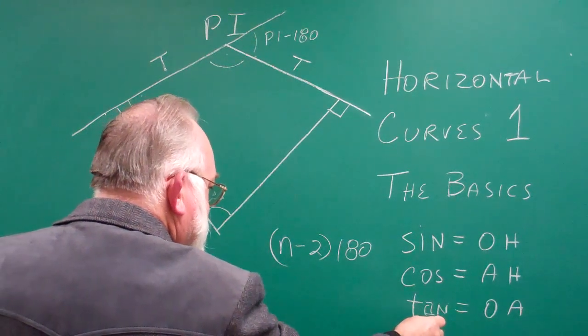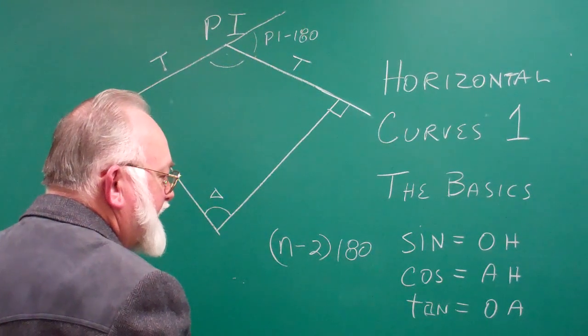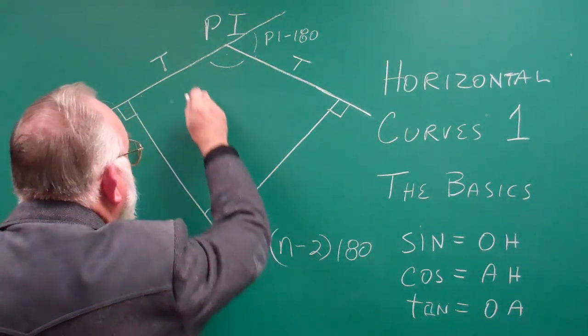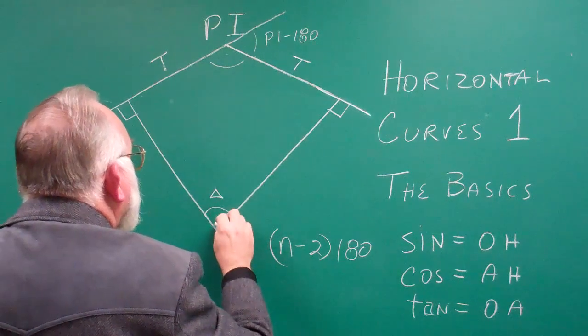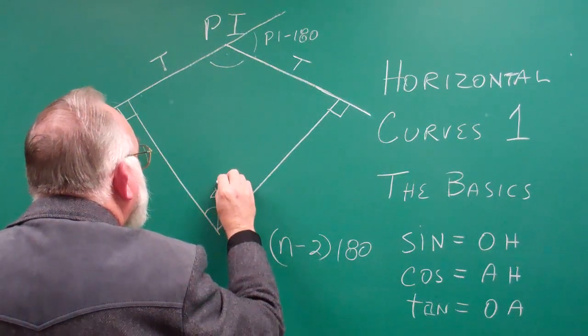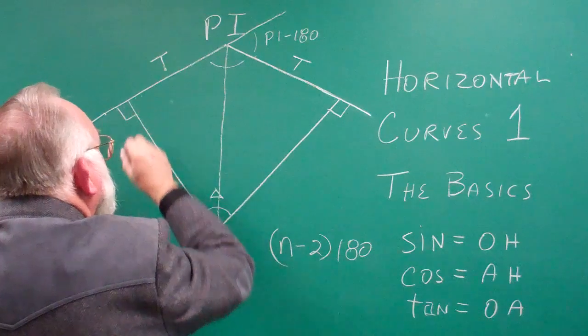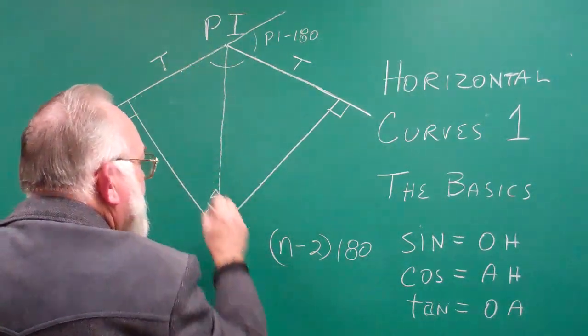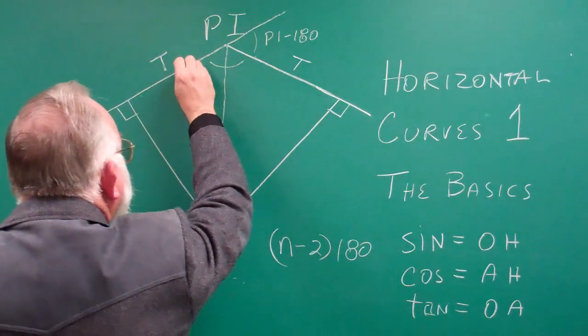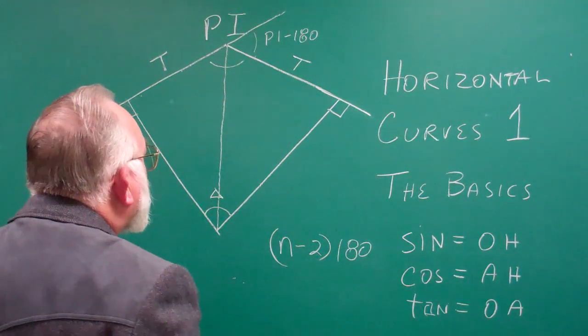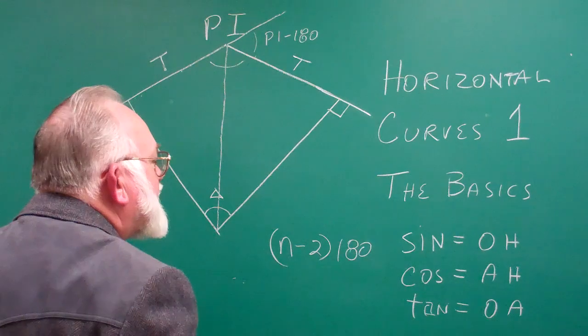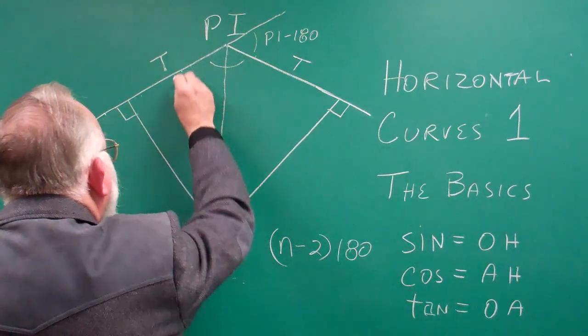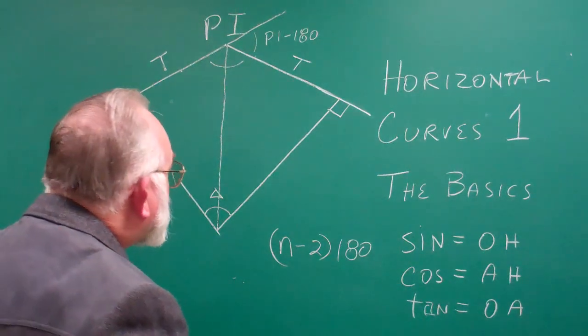Now remember that the tangent function of a right triangle is the opposite over the adjacent. Well, the opposite here, if you have this line going up here, you're going to get a right triangle. And that is the tangent because it's the opposite to the adjacent, and that's your hypotenuse. So you've only got one formula that deals with opposite and adjacent, and that's the tangent.